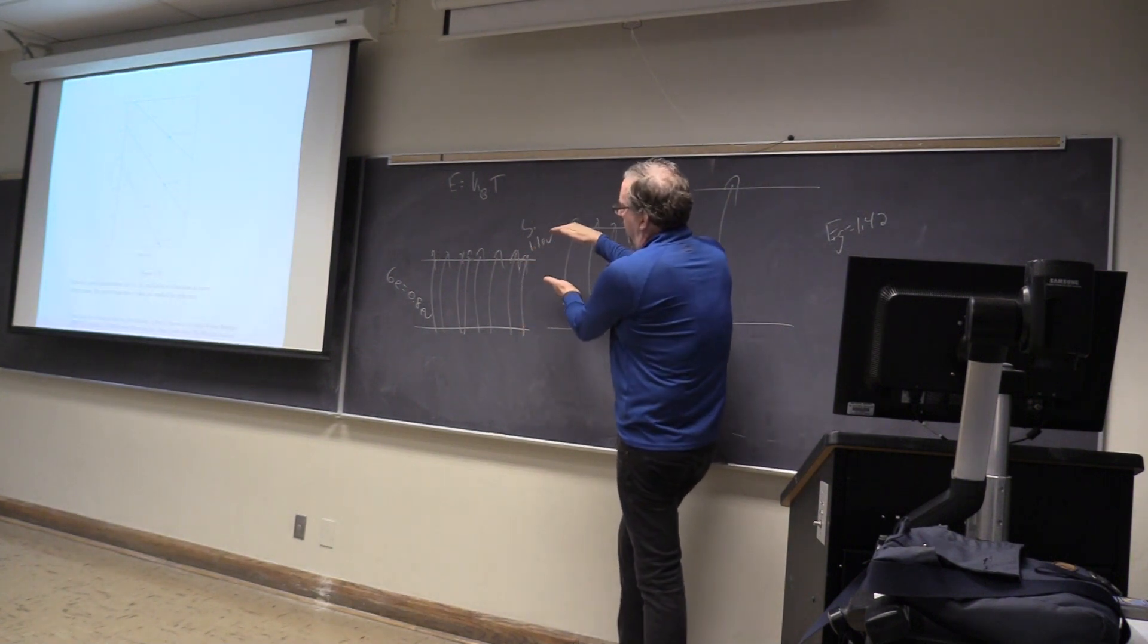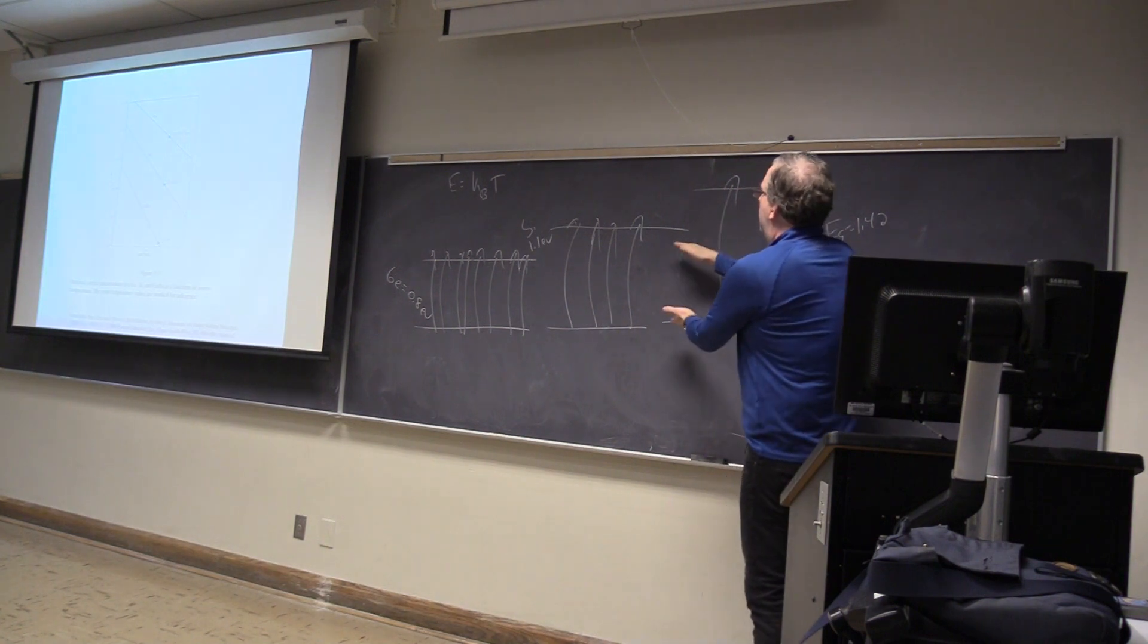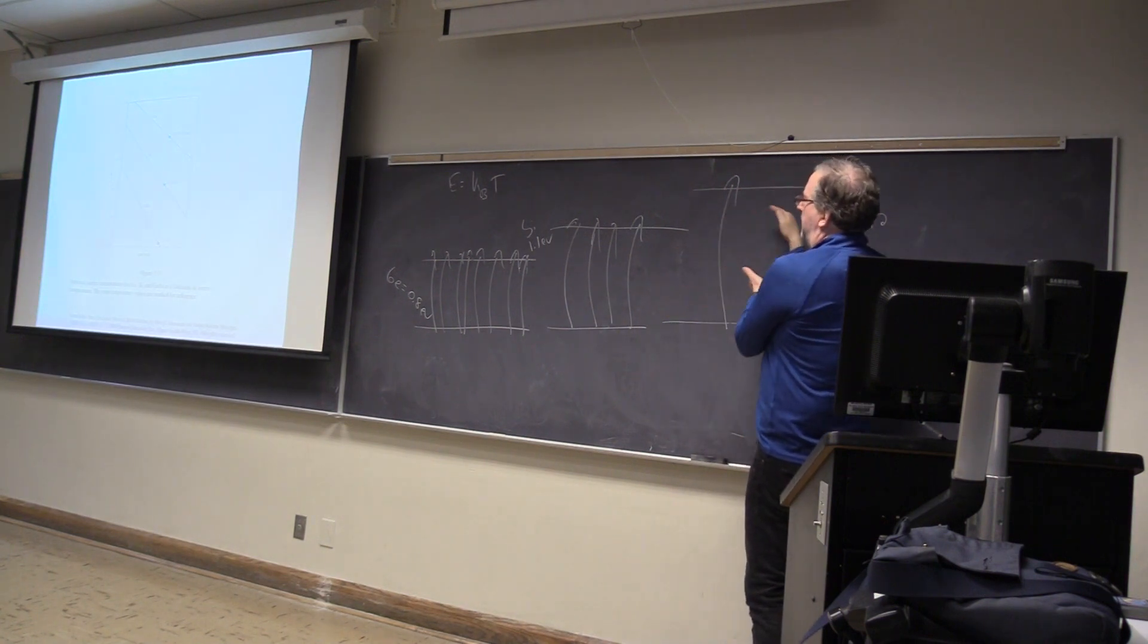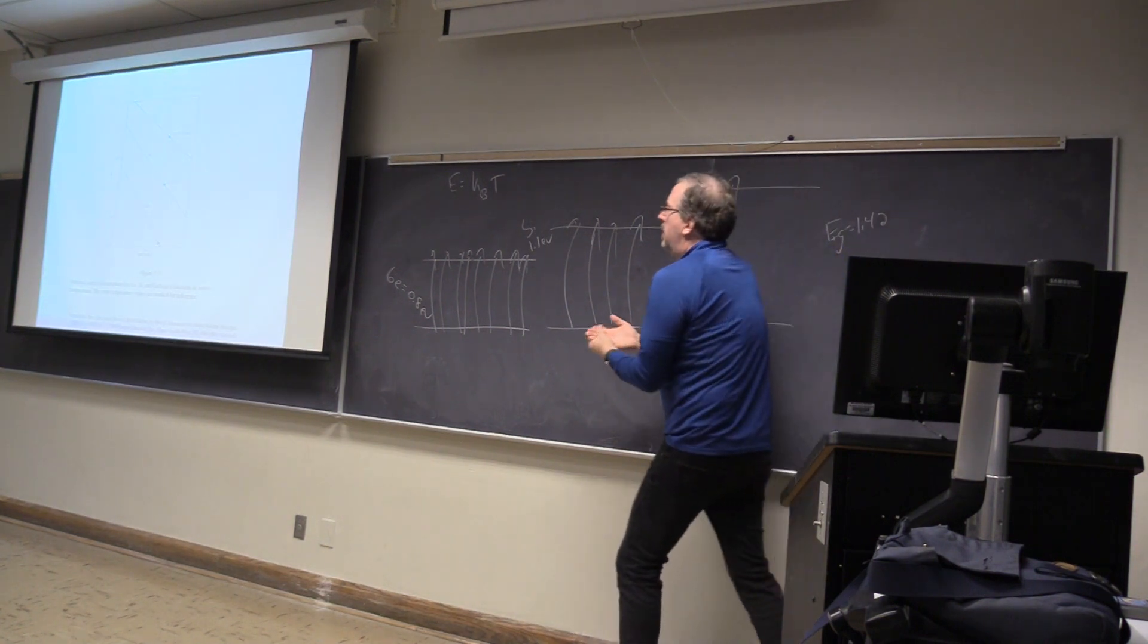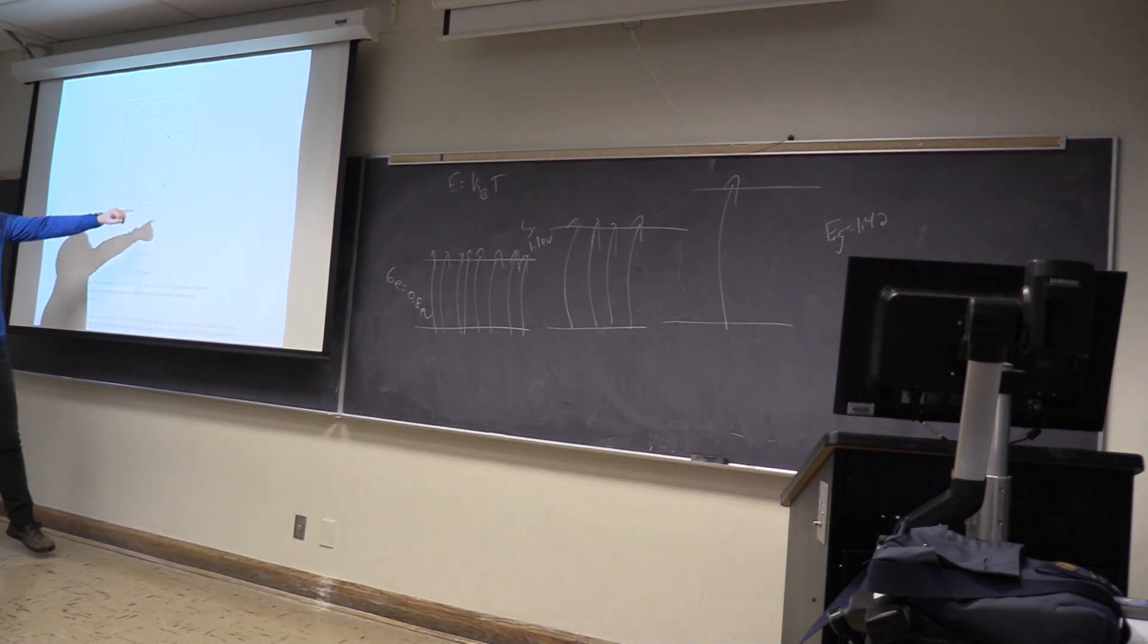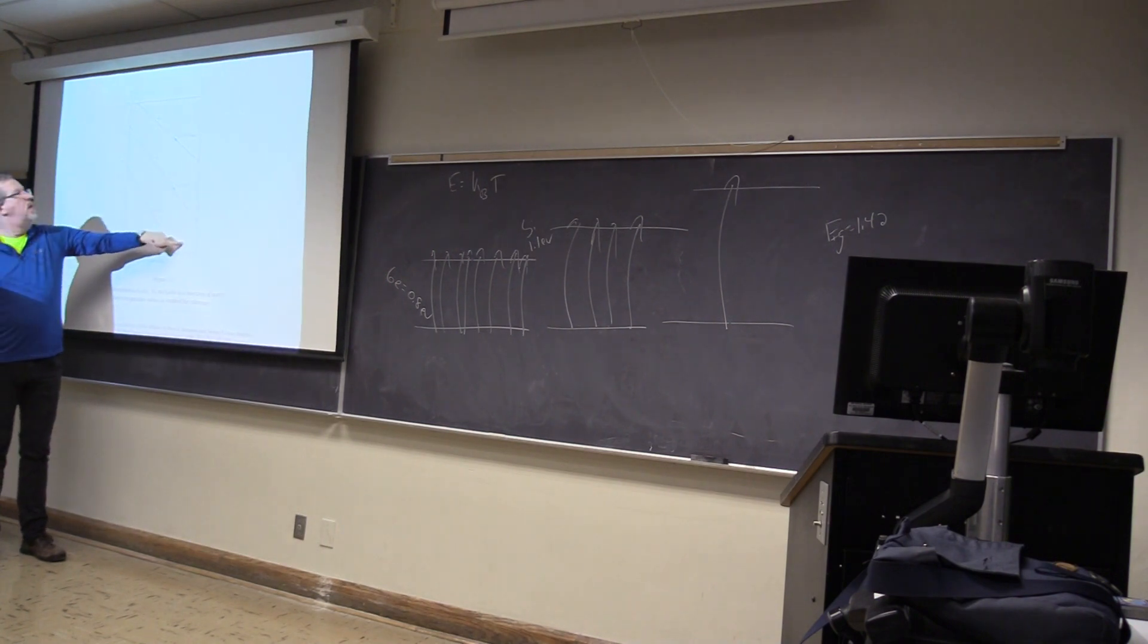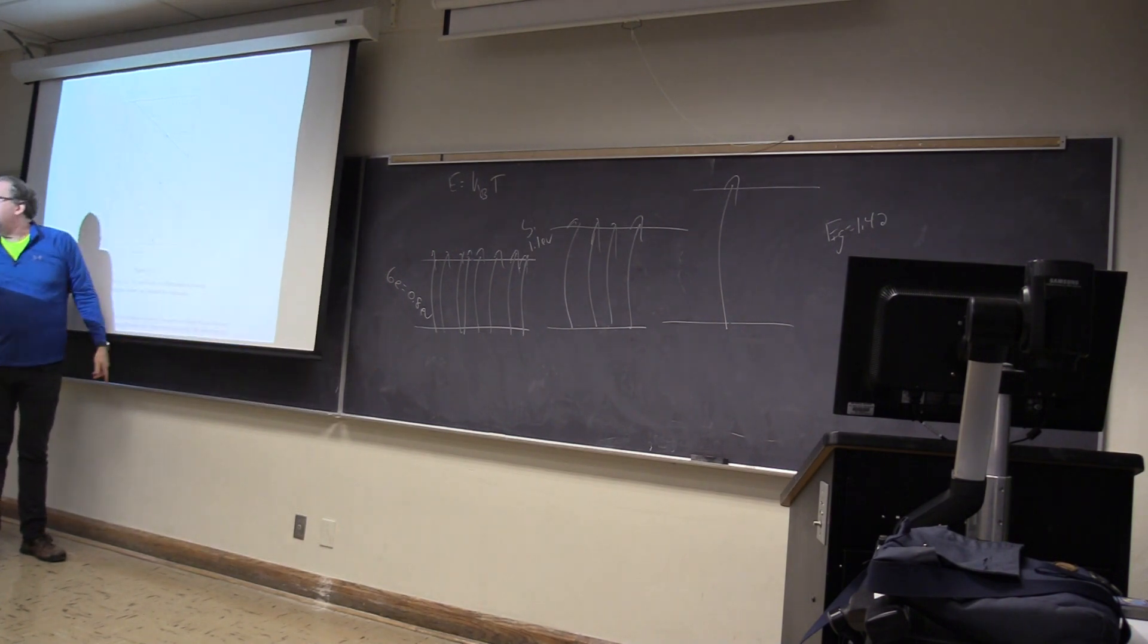Here's the comparison: germanium is twice as likely as silicon, and silicon is twice as likely as gallium arsenide. It's even more dramatic because it goes from 13 to 10 to 6, so it's really three to four magnitude difference in just that 0.3 electron volt discrepancy.